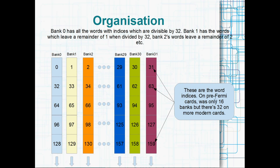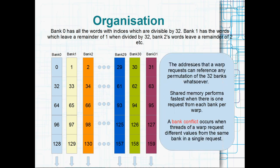On pre-Fermi cards, you've only got 16 banks, so you'd need to consider things to half warps — 16 threads. But we're not really talking about pre-Fermi here. What we are talking about is bank conflicts. The addresses that a particular warp — that's the 32 threads — can request from memory can form any permutation of 32 banks whatsoever, from every thread requesting from bank 0, all the way to every thread requesting from bank 31, and everything in between. It's completely up to the programmer and the algorithm.